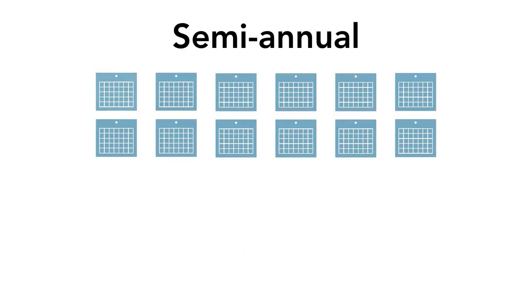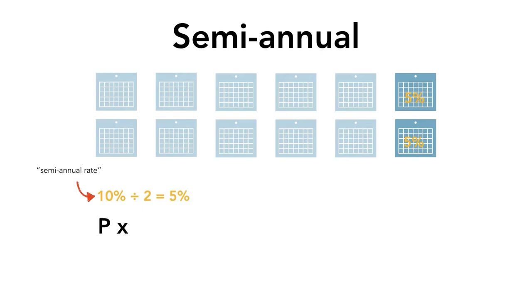Semi-annual compounding is when the interest is added to our investment twice a year. Using our previous example, instead of receiving 10% interest at the end of each year, you will receive it in two chunks. That is, you will earn 5% every six months. We call this a 10% semi-annual rate. To calculate semi-annual compounding, you take the formula P times (1 plus R) to the N and adjust it. There are two parts that you need to adjust in this formula.